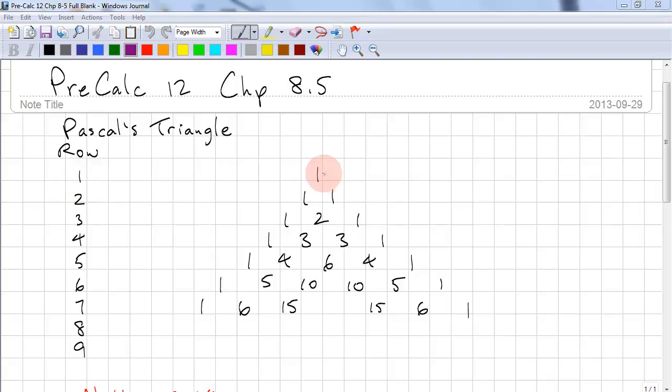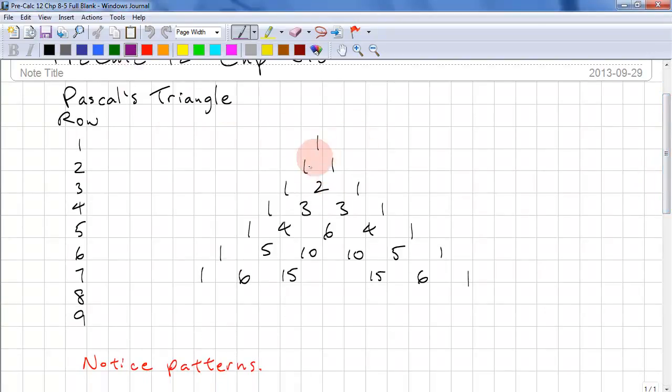We have Row 1, Row 2, 3, 4, 5, 6, 7. What do you want to notice first? Well, the easiest thing is there's 1's all the way down the outside.